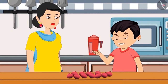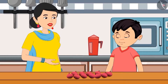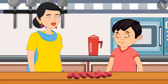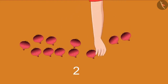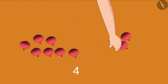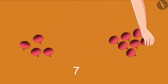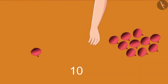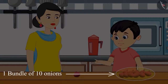Yes mummy, I will tell you now. Wait, count the number of onions by making a bundle of 10 each. For this, first make 1 bundle of 10 onions. Ok mummy — 1, 2, 3, 4, 5, 6, 7, 8, 9, and 10. Take this mother, this is a bundle of 10 onions.